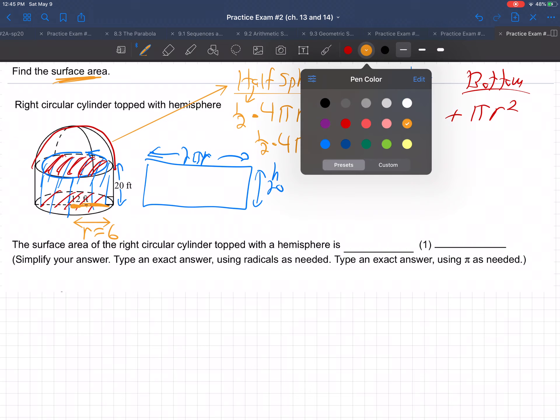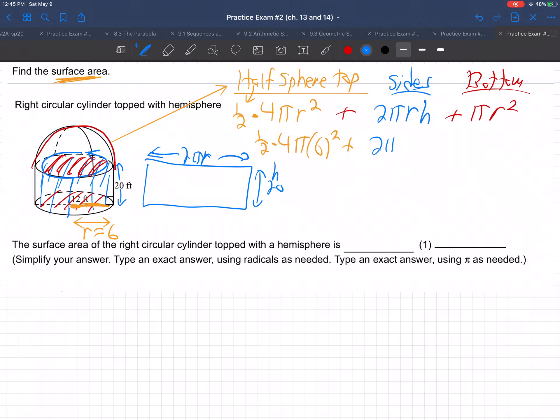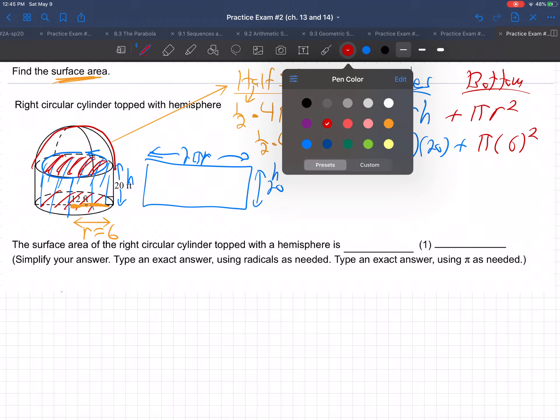Plus, and then 2πr, again, the radius is 6. The height is right here. It's the 20. And again, the radius is 6.